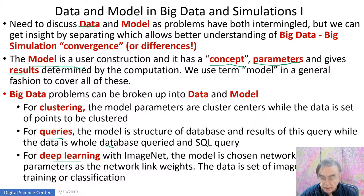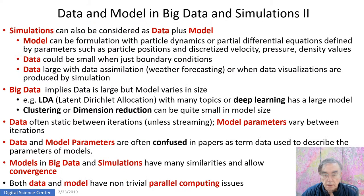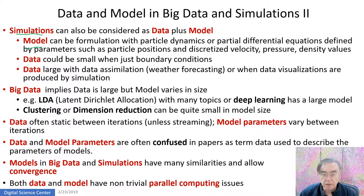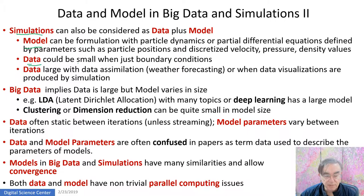For deep learning, the model is the network with all its links — a huge model — and then the data is the images which you're trying to classify. In simulations, we have the same situation: data and model. The model could be the set of all the pressures and velocities for climate or weather simulation, or the galaxies and parts of the universe for an early-universe simulation. The model is always large for simulations. For data, it can be small — if you're doing quantum thermodynamics for fundamental particles, you just need to specify the number of dimensions of space-time, which is four, and you get the answer because there's a fundamental theory.